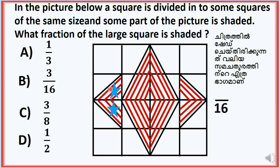Let's say we have two squares and a half square. Here we have 4 squares in this part. Look at those two squares in half.